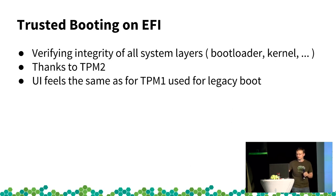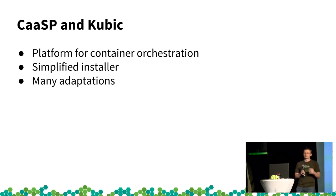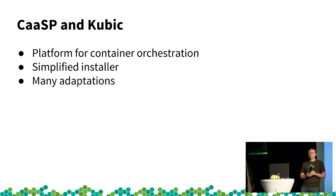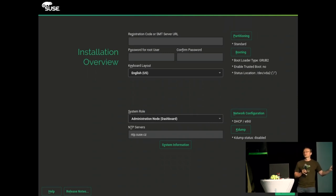Another part is CaaSP and Kubic — if you saw the presentation yesterday, it's a platform for container orchestration. The main adaptation in YaST is the simplified installer, a one-click installer you may have seen today. There are many adaptations to make the installer small and allow fully automatic installation. As you can see, the only mandatory part is a password for root and its confirmation — other parts are automatically proposed.